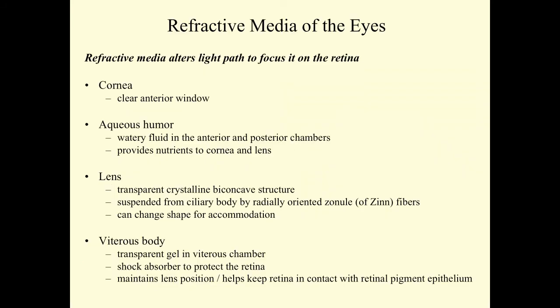The refractive media of the eyes alter the light path to allow the light to be focused on the retina. The refractive media consists of the cornea, which is the clear anterior window, the aqueous humor, which is a watery fluid in the anterior and posterior chambers. The aqueous humor also provides nutrients to the cornea and the lens. The lens itself is transparent, crystalline, biconcave structure. It's suspended from the ciliary body by radially oriented zonular fibers, the so-called zonula of Zinn fibers. The lens can change shape for accommodation. And the vitreous body is a transparent gel in the vitreous chamber. It essentially acts like a shock absorber to protect the retina, helps maintain the lens position, and keeps the retina in contact with the retinal pigment epithelial cells.